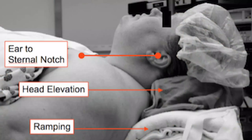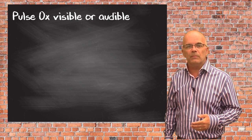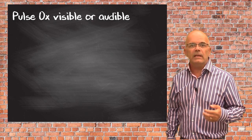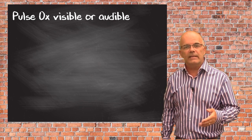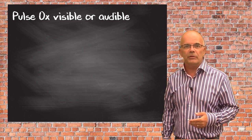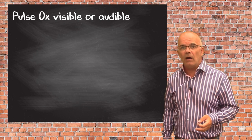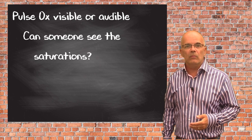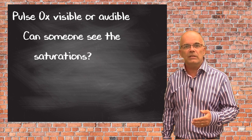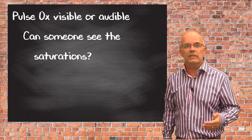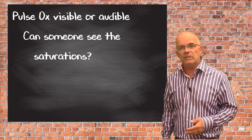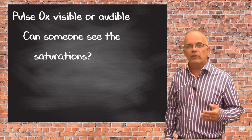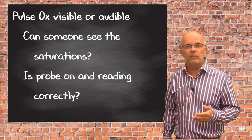Positioning: ears to sternal notch and face parallel to the ceiling is the best position for viewing the airway with the laryngoscope. Pulse ox visible or audible: personally I don't like people telling me what the SATs are doing unless I ask them, as it puts pressure on me when I'm already stressed. But I do need to know what those SATs are, so it's important that I can either see them myself or someone else can relay it. The rate of decline of saturations increases the lower those SATs are, with the inflection point where they start to drop quickly being at about 93%. Ensure that the probe is on the patient and reading correctly before we start.